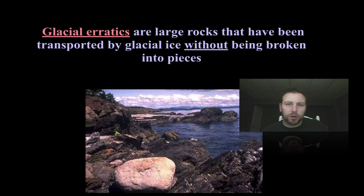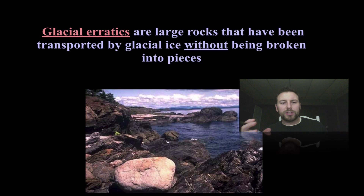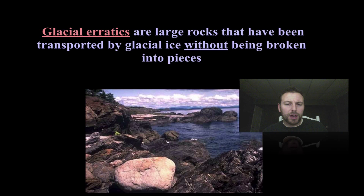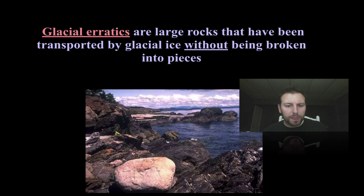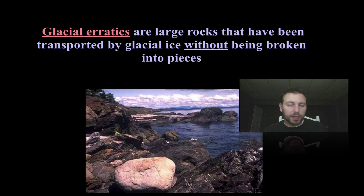Then we have what's called glacial erratics — unusually large boulders that have been transported by glaciers without being broken into pieces. There are several examples of glacial erratics here on Long Island: one is in Glacier Ridge, a mountain bike trail over in Farmingville, and another is near Stony Brook University, with plenty more around Long Island.